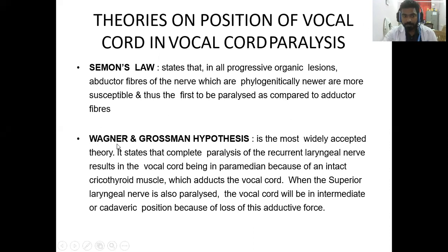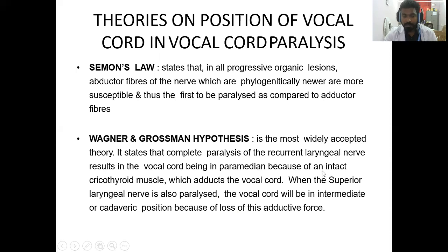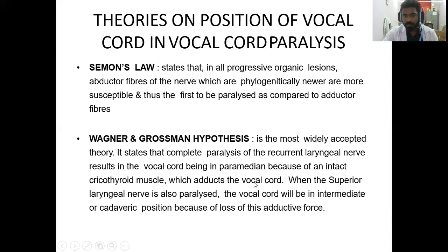The other rule is the Wagner and Grossman hypothesis, the most widely accepted theory. It states that complete paralysis of the recurrent laryngeal nerve results in the vocal cord being in the paramedian position because of an intact cricothyroid muscle which adducts the vocal cord. If there is complete paralysis of the recurrent laryngeal nerve, the vocal cord assumes the paramedian position — 1.5 millimeters lateral from the midline — because of the intact cricothyroid muscle supplied by the superior laryngeal nerve, which pulls the cord medially.